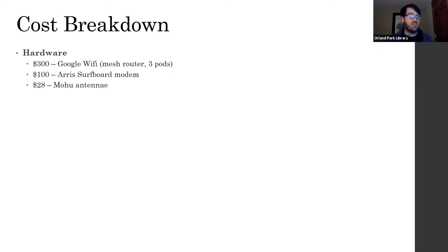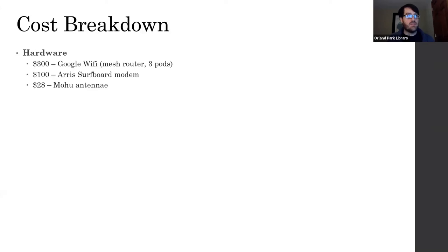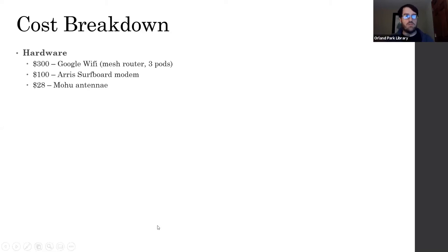The last thing we did was buy a Mohu digital antenna. She was very lucky that her home in Orland had a very strong signal from TV broadcasts in the area. The Mohu digital antenna allows you to pick up many local channels at no cost — they're free. They plug right into the back of your TV. In her case, it sat right behind her TV and she had great signal strength, getting all the local channels for news, sports, and more without paying for anything.